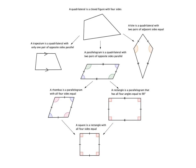All you have to do to be a parallelogram is have two pairs of opposite sides parallel. The most general type of parallelogram has two pairs of opposite sides parallel, and because of that, the two pairs of opposite sides are equal to each other, and the opposite angles are equal to each other.